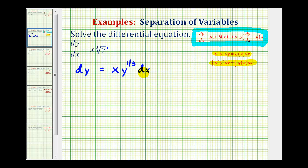Notice how we have this x term here and dx on the right, but we still have this y to the one-third. So now we'll divide both sides of the equation by y to the one-third.